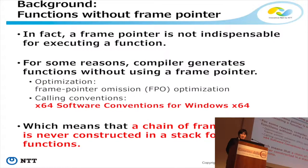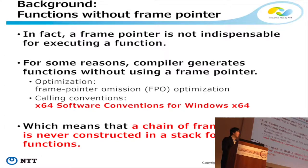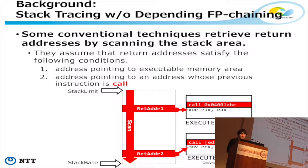However, a frame pointer is not indispensable for executing a function. For some reason, a compiler generates a function without using a frame pointer. For example, there are some optimization techniques such as frame pointer omission, the FPO option. And some calling conventions regulate that functions shouldn't use a frame pointer. The X64 software conventions for Windows X64 is one example. In such cases, a chain of frame pointers is never constructed in the stack for such functions.